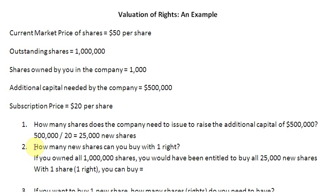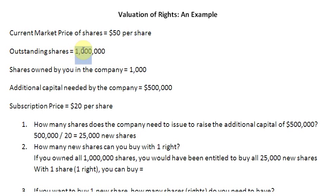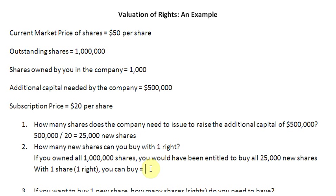The second question is: how many new shares can you buy with one right? If you owned all 1 million shares, you'd be entitled to buy all 25,000 new shares. Scaling down to one share — which also carries one right — we divide 25,000 by 1,000,000 to get 0.025 shares. So with one right, you are entitled to purchase 0.025 new shares in this rights issue.